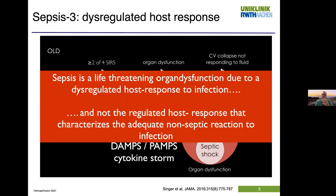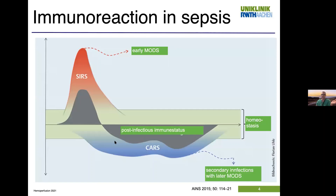You get patients who have this inadequate immune reaction, inadequate host response, and they go into multi-organ dysfunction. Some patients have post-infectious immune suppression, also out of homeostasis, and get secondary infections with later multi-organ dysfunction. If we're talking about hemoperfusion, one of the goals might be to create a normal immune reaction, to create homeostasis, and that might be helpful.